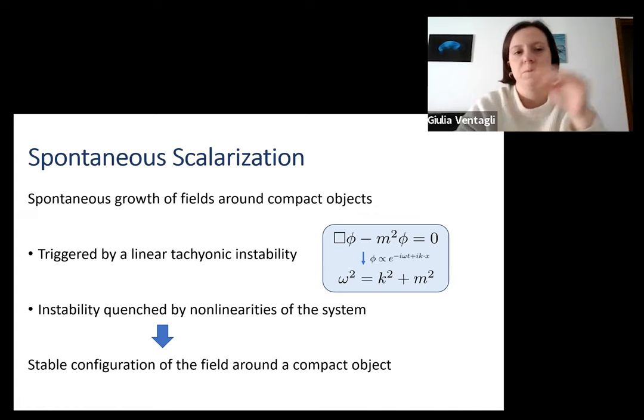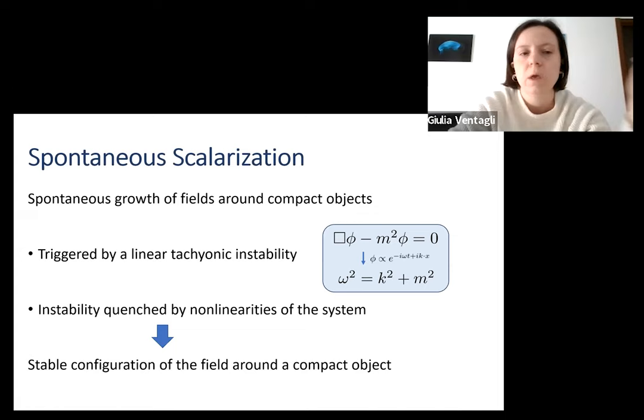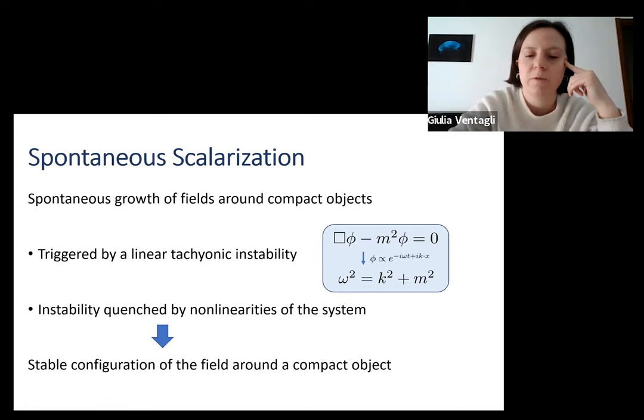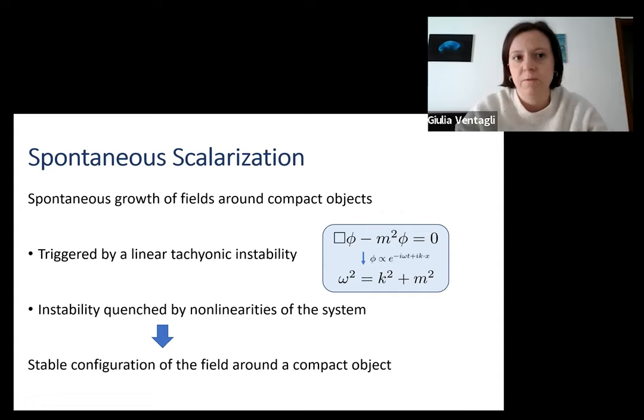It can be understood as a screening mechanism that allows a compact object, like neutron stars or black holes, to have a non-trivial scalar configuration close to or inside the compact object where gravity is strong, and at the same time allows retrieving GR solutions far away from the compact object. The theory affected by spontaneous scalarization effectively has two branches of solutions: the GR branch and the scalarized branch. The transition between the two branches happens when a certain threshold is crossed, usually in compactness or curvature.